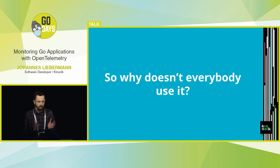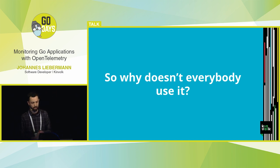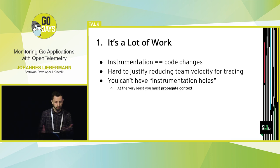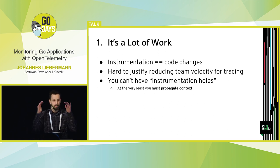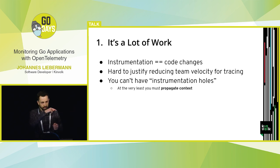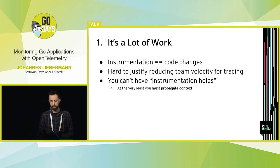So why doesn't everybody do distributed tracing? Everybody does logging, everybody does metrics. Why not tracing, which has the potential of being arguably much more powerful? Let's look at some of the main challenges. First of all, it's a lot of work — instrumentation usually requires changing your code. Trying to convince one team to lower their output just to have tracing enabled is hard. If the service that team's responsible for is in the request chain, they have to do instrumentation, otherwise things will break. It's hard to justify reducing your team's velocity for the benefit of tracing.